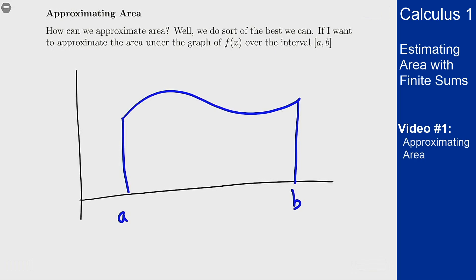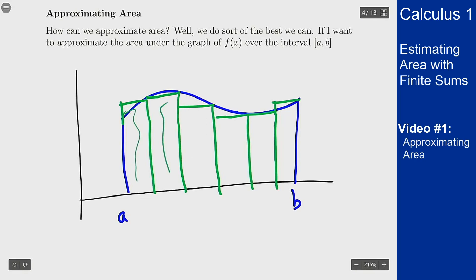Well what I can do is just chop this into a bunch of pieces and then approximate each of these pieces by a rectangle based on where the graph is. Using this approximation I would get that the area here was the total area under all of these green ones which is not the same as the area under the blue curve but it's close, and the more and more rectangles I make I'll get closer and closer to this actual area here.